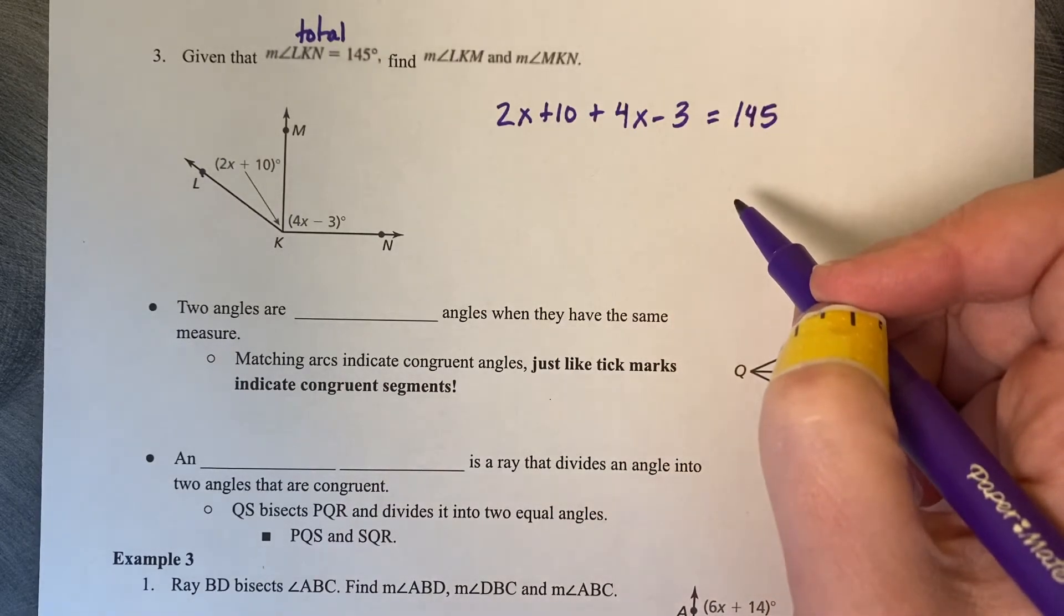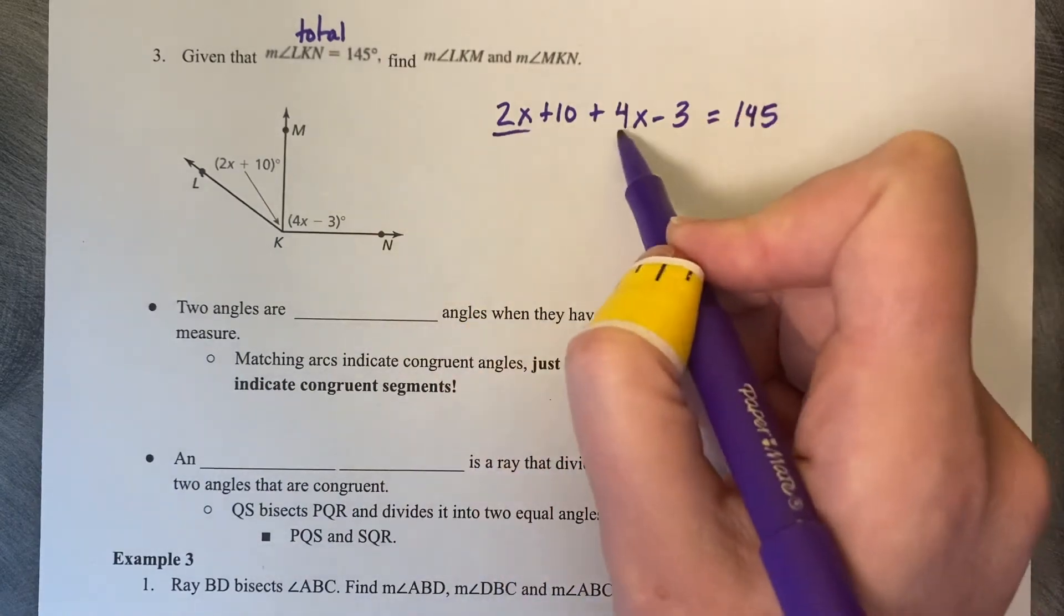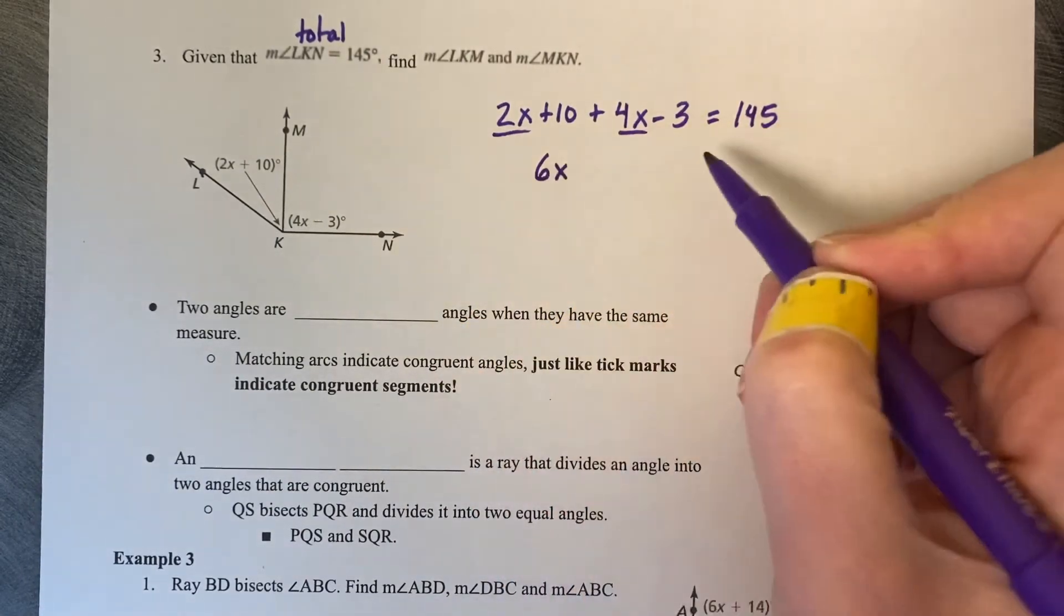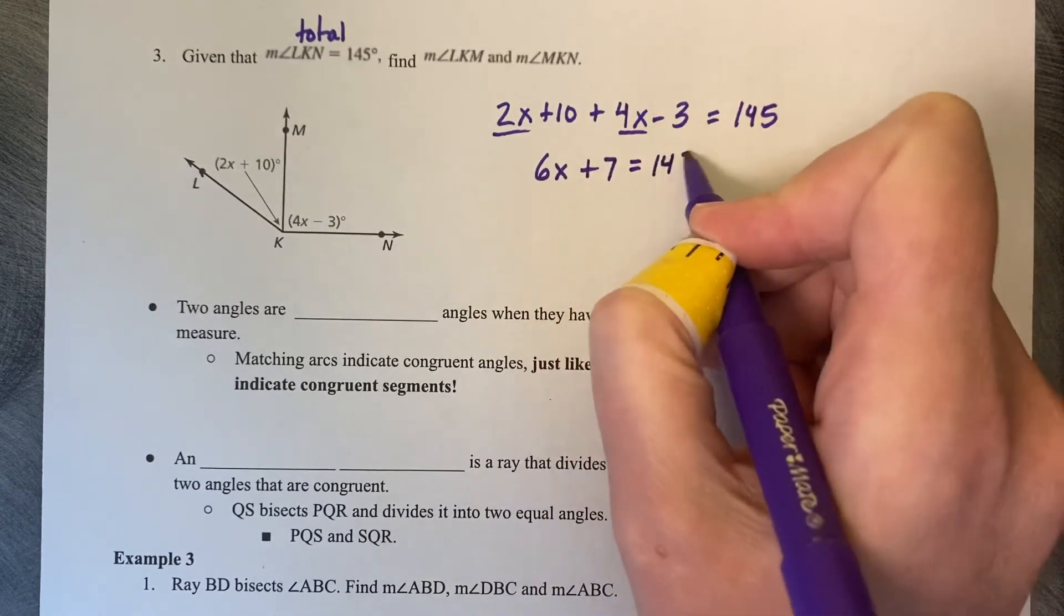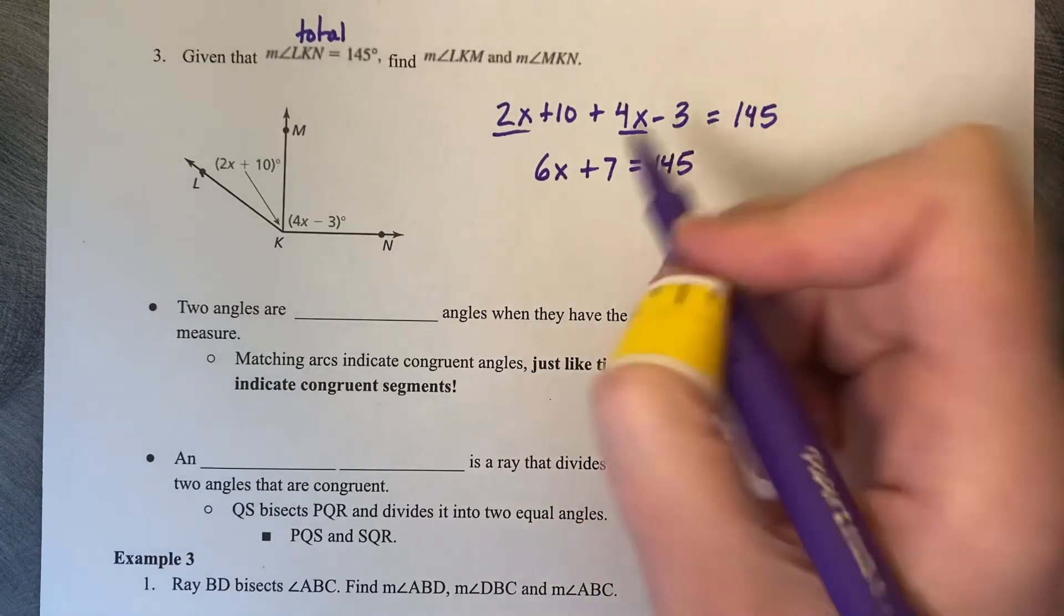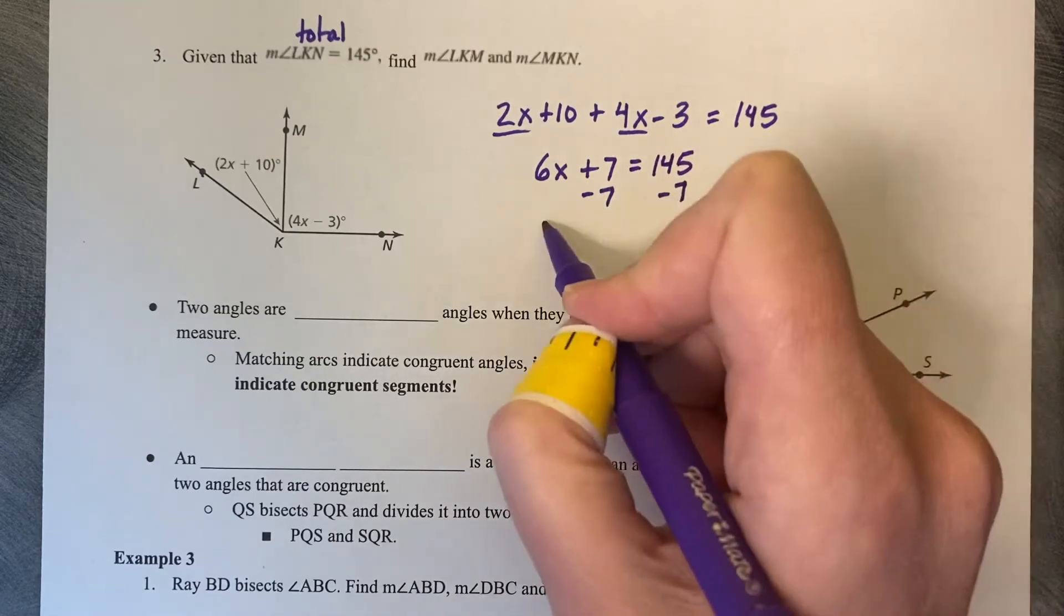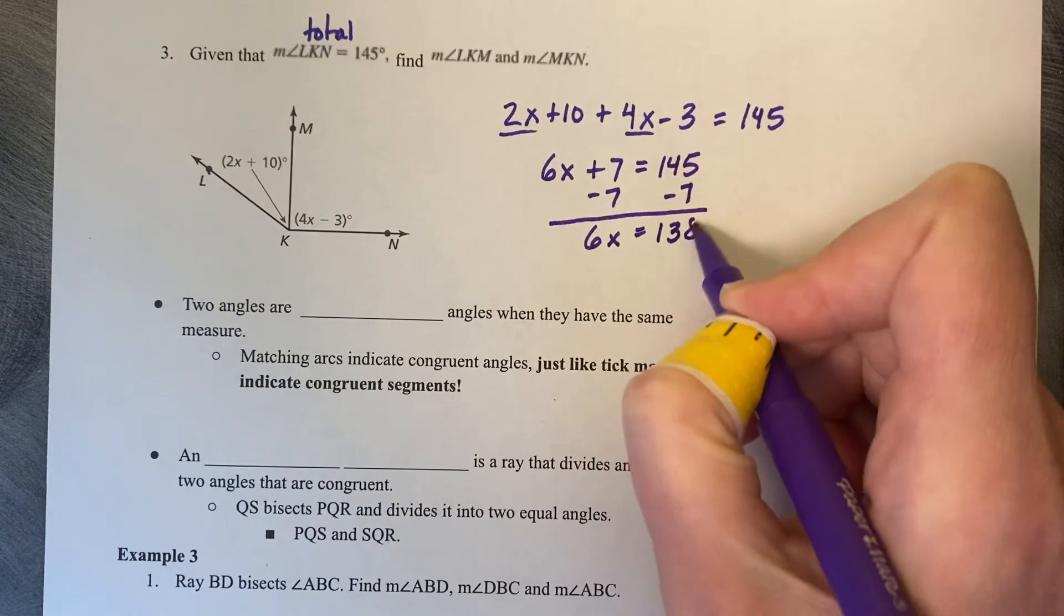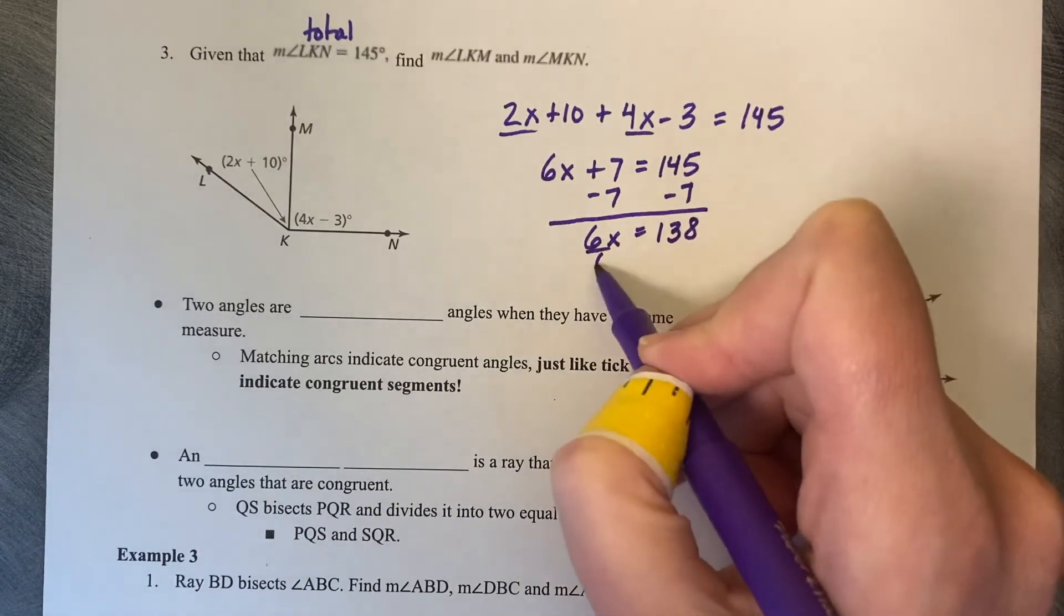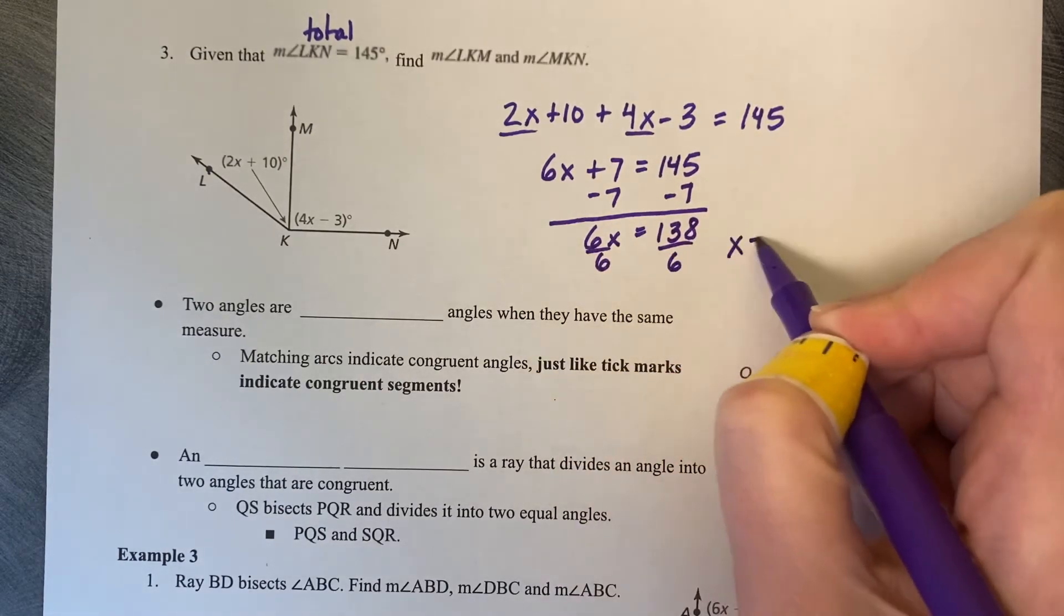Now we're going to solve this by combining like terms. 2x and 4x make 6x. 10 take away 3 is 7, equals 145, minus 7, 6x equals 138, divide by 6, and we get x equals 23.